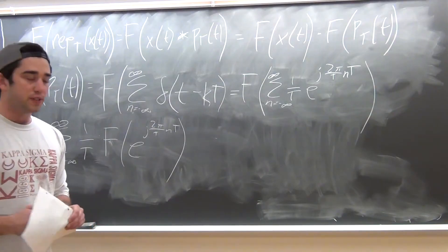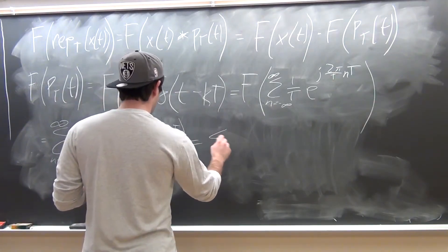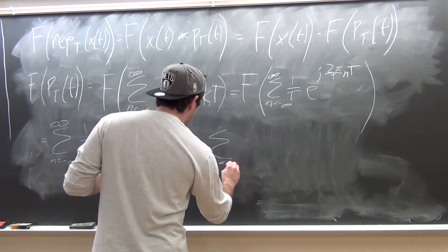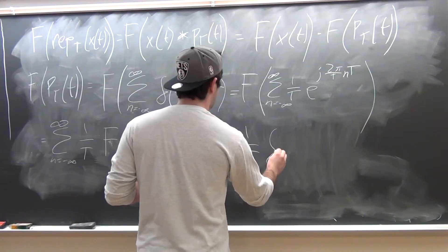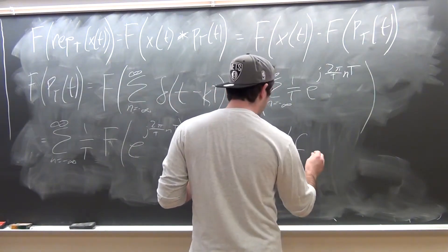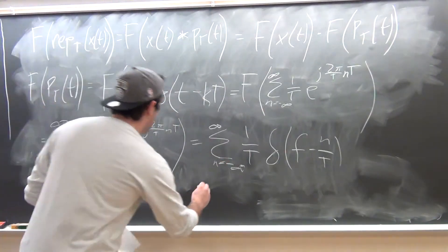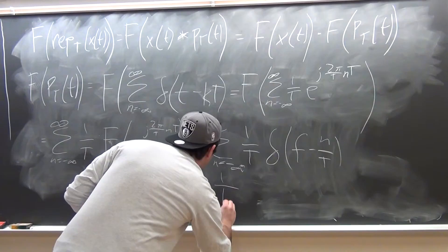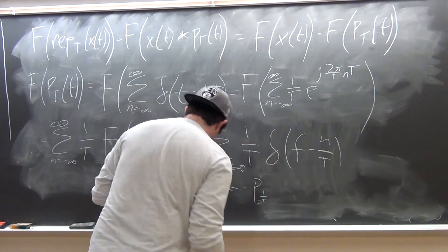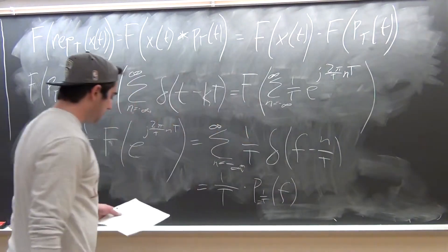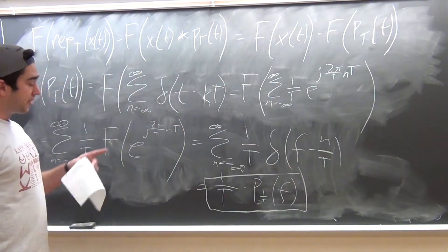Taking the constants out, we are left with finding the Fourier transform of the complex exponential. From our table of Fourier transforms, we know that the transform of that complex exponential yields an impulse. Summing these up gives us the summation from negative infinity to infinity of one over T times a new impulse train at frequency one over T — that is, (1/T)·P(f). So this term is the Fourier transform of the impulse train P(t).